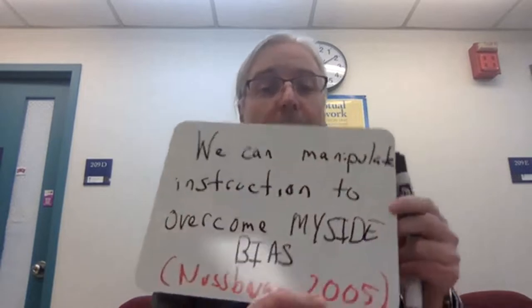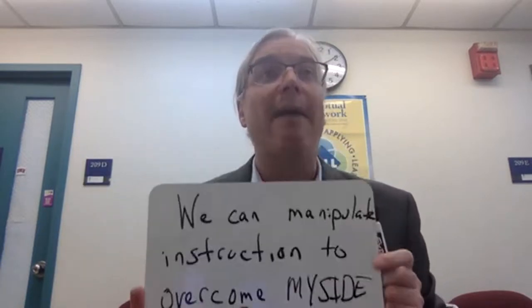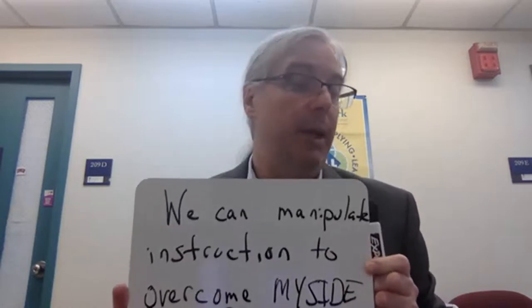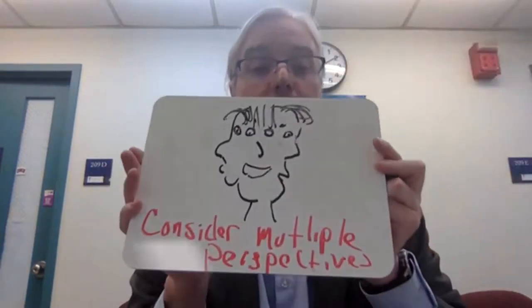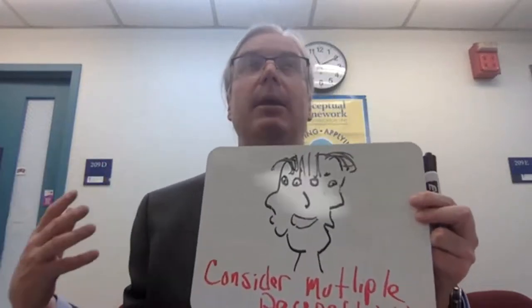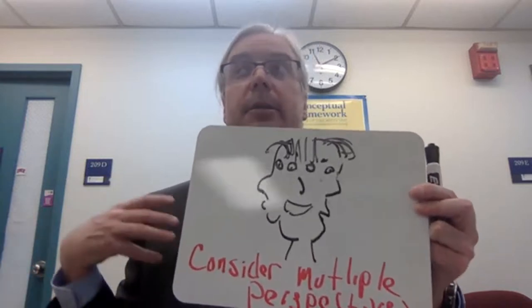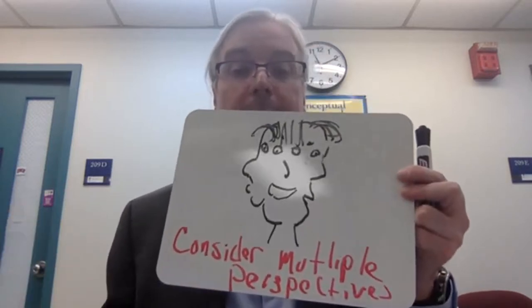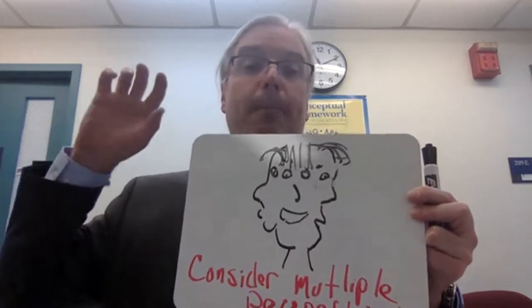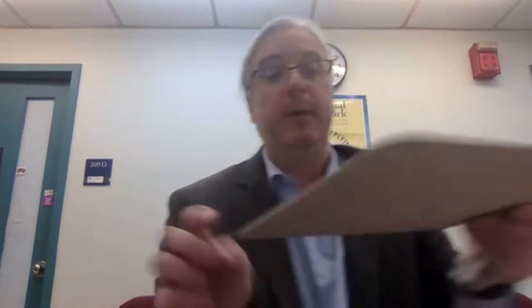So what do we do about this confirmation bias — this my-side bias? We have proven that we can manipulate instruction to overcome the my-side bias and have our argumentative writing and multiple-source reading actually help build reasoning skills. It's about getting people to consider multiple perspectives. I'm not even the biggest fan of the word 'bias,' because to me it's not so much about right or wrong — it's just the perspective, the story you bring to the new evidence you're integrating from your readings. Instead of writing to the bias they already have, we have to get students to consider multiple perspectives.